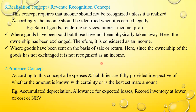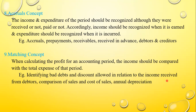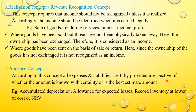Number seven is the prudence concept. According to this concept, all expenses and liabilities are fully provided irrespective of whether the amount is known with certainty or is the best estimate amount. Examples: accumulated depreciation, allowance for expected losses, recording inventory at lower of cost or NRV. Whenever you are making a provision, you can consider it as a prudence concept.